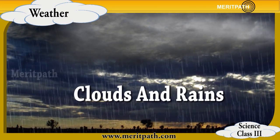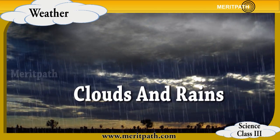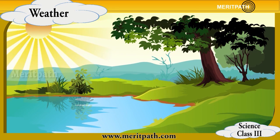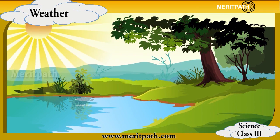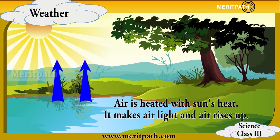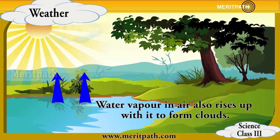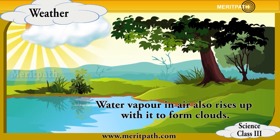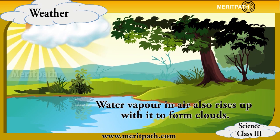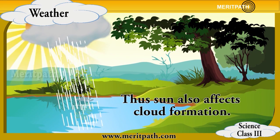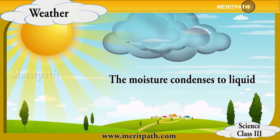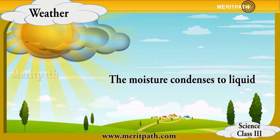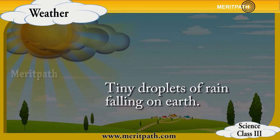Clouds and rain: The clouds are formed when the air rises, the wind expands and cools. Rain occurs when the warm air is cooled, the moisture condenses to liquid, forming tiny droplets of rain that fall on earth.